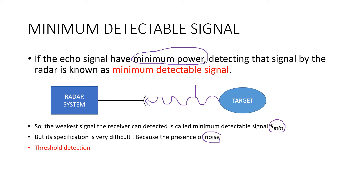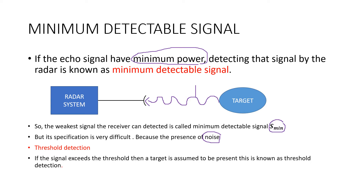One very important concept to understand about the minimum detectable signal is called threshold detection. If the signal exceeds the threshold, then a target is assumed to be present — this is known as threshold detection. That means a minimum strength of the signal is required to detect. If the strength of the signal is below a particular threshold value, then the signal cannot be detected.